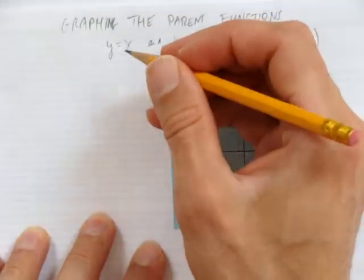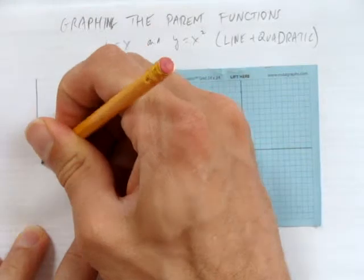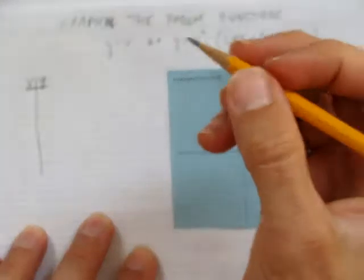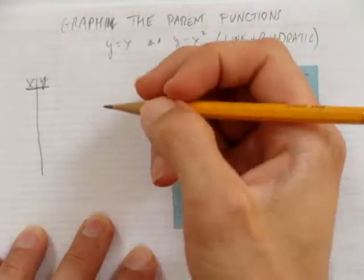When we go to graph the equation of a line, we'll make a table of values. We'll choose some x's and some y's. You want to choose small, easy numbers to make your life easy.